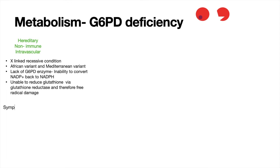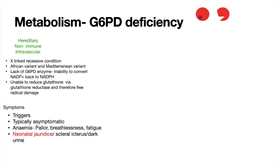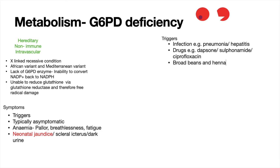In terms of symptoms, most patients are generally asymptomatic; however, there are certain triggers to look out for. When these triggers occur, patients may develop anemia, neonatal jaundice, and also conditions like gallstones. The triggers do come up in exams, so it's important to know about a couple of them.